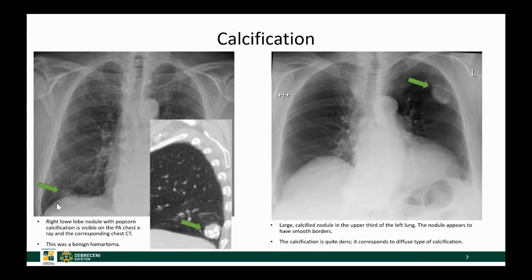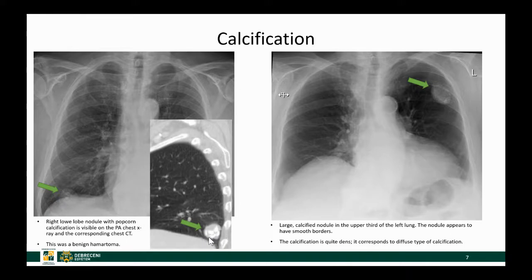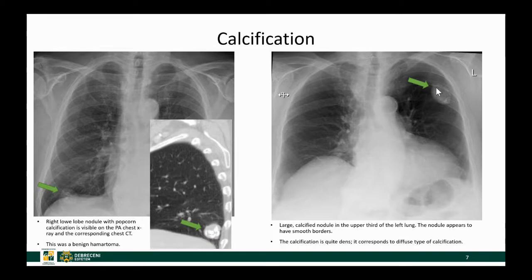Here are some examples. There is a nodule overlapping the right hemidiaphragm — quite large, almost 3 cm — with some foci of calcification that are difficult to characterize on x-ray. A CT was obtained showing the right lower lobe nodule with typical popcorn calcification, confirming it as a benign hematoma. Another example shows a large nodule in the upper third of the left lung that is almost homogeneously calcified — this is the diffuse type of calcification, another pattern of benign calcification.